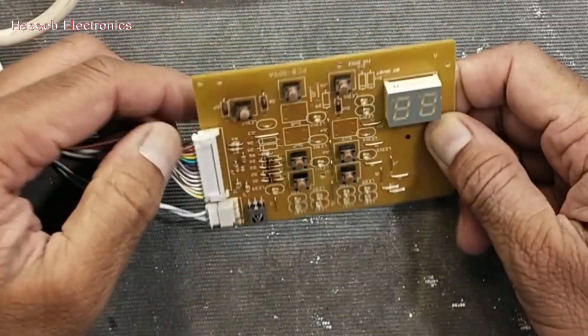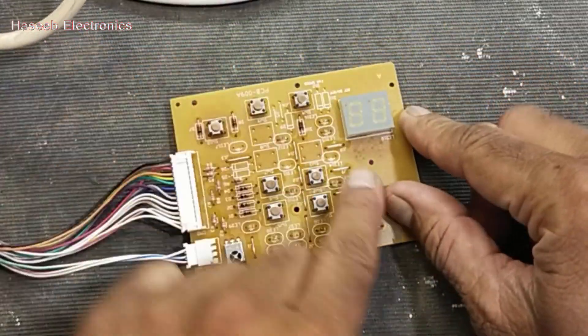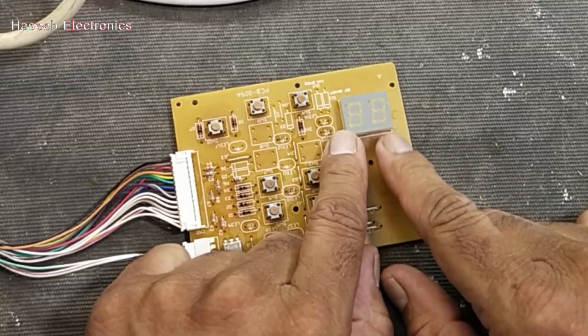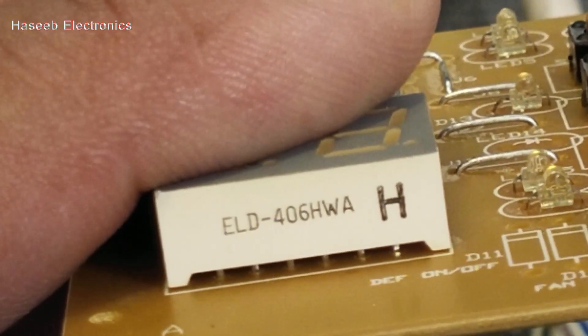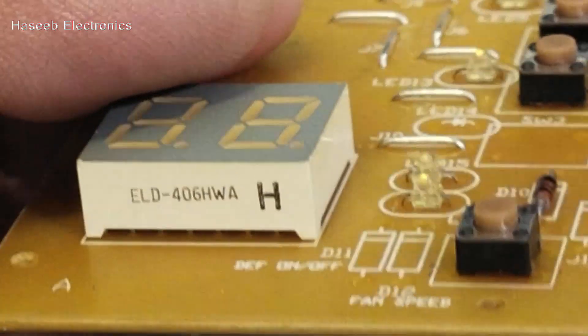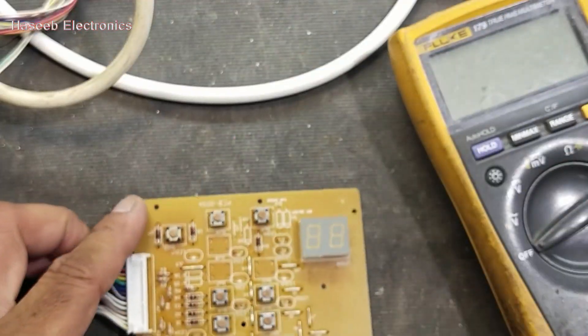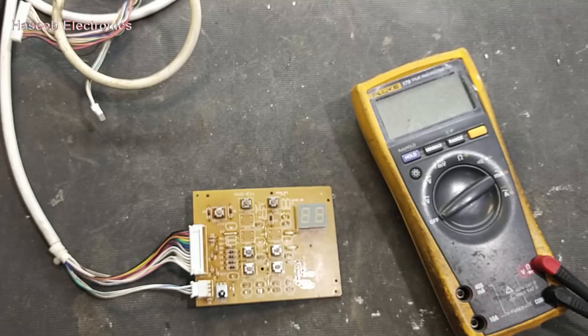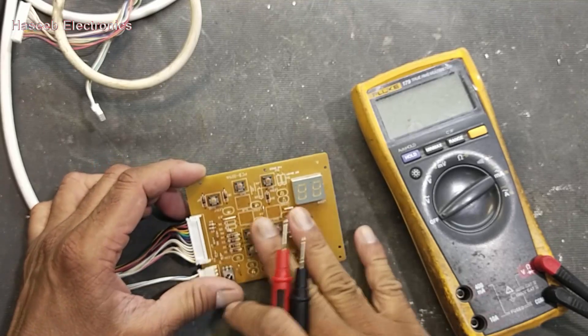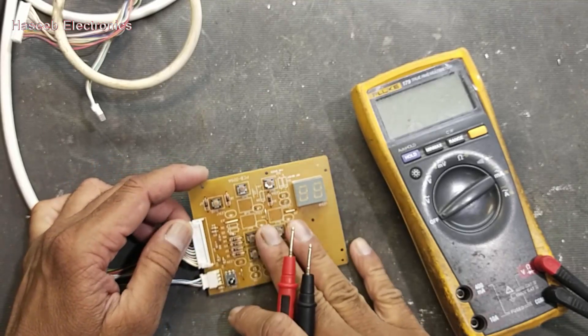Assalamualaikum warahmatullahi wabarakatuh friends. In this video we will discuss how to test seven segment display. It is ELD-406HWA dual digital seven segment display. This board from petrol air conditioner two-ton blower was dead, it was not displaying anything.